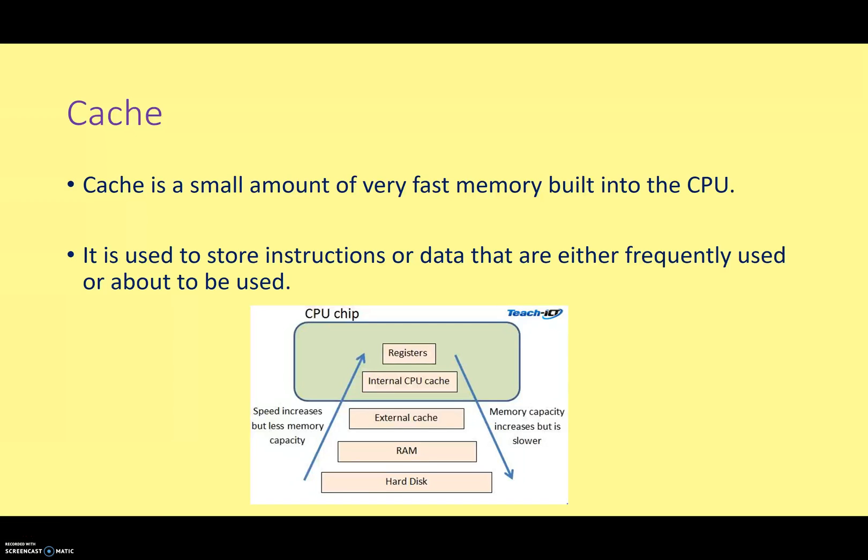Now, again, if you have a look at the diagram here, you can see we've got this memory hierarchy. We've got the hard disk at the bottom, very large, very slow, and as we move up, we get faster and faster, but the storage space gets smaller and smaller and smaller.